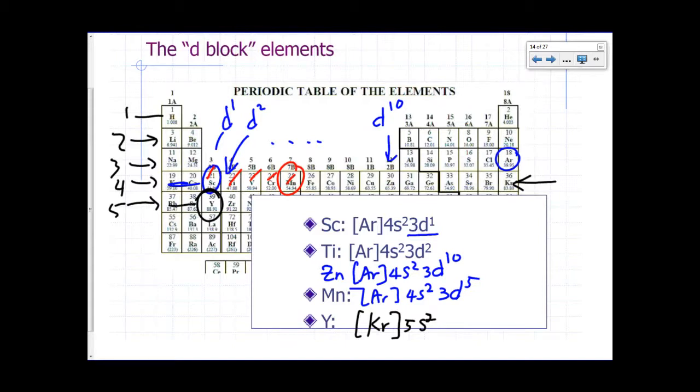5S2. After 5S comes 4D, remember, this is 3D, the next row is going to be 4D, so 4D1. And then zirconium after that is going to have 4D2, and so on.